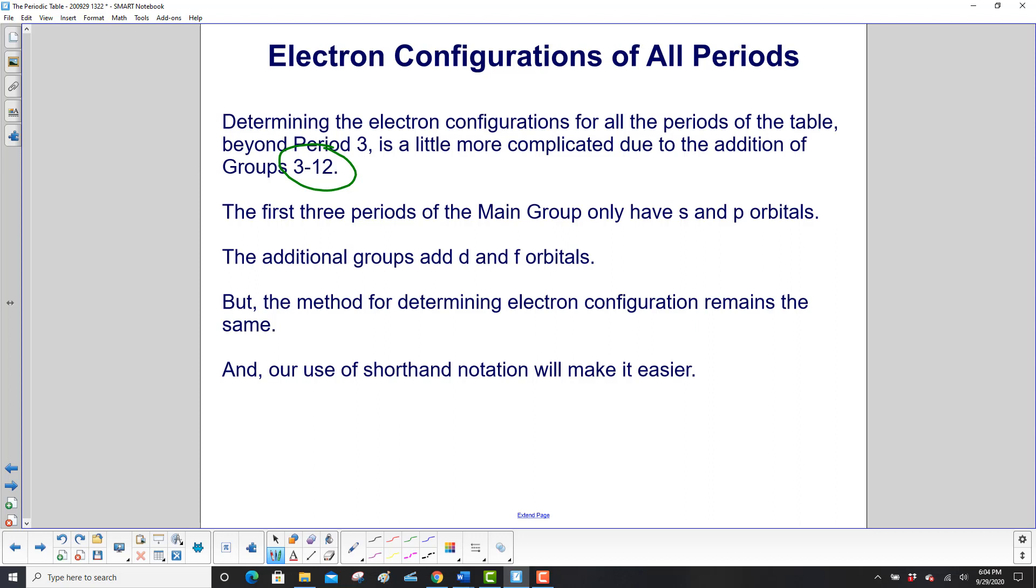The first three periods of the main group only have S and P orbitals. The additional groups add D and F orbitals. But the method for determining electron configuration remains the same, and our use of shorthand notation will make it easier.